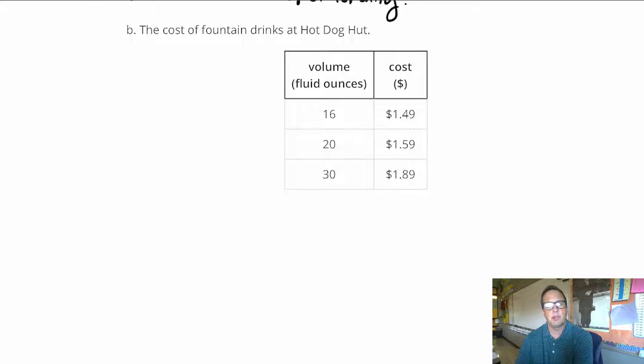Moving on to B, the cost of fountain drinks at Hot Dog Hut. We've got the following volume and cost. So what we're going to do here is I'm going to use V for volume, I'm going to do C for cost. And so when I do this, I want to do C divided by V, same thing, Y divided by X.